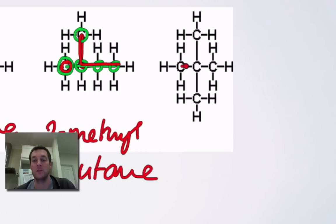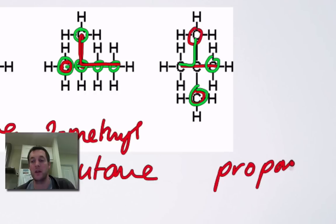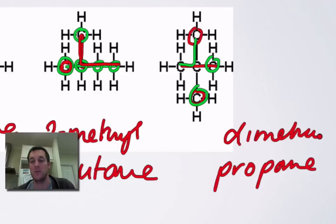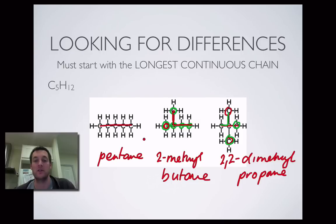Here's another way of drawing five carbons with twelve hydrogens — a longest chain of three with two one-carbon branches coming off it. Either way I draw it, I name it the same way. It's got three carbons in its longest chain, so it's called propane; it's got two methyl groups attached, so dimethyl. They're both on the second carbon, so it's 2,2-dimethylpropane. Different structures, same molecular formula, different molecules — so they're all isomers of one another.